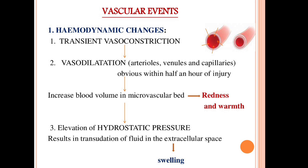The first hemodynamic change is transient vasoconstriction, which is of short duration — blood vessels in the region are briefly constricted. This is followed by vasodilation of arterioles and capillaries. Next, there is increased blood volume in the microvasculature at the site of injury, causing redness.